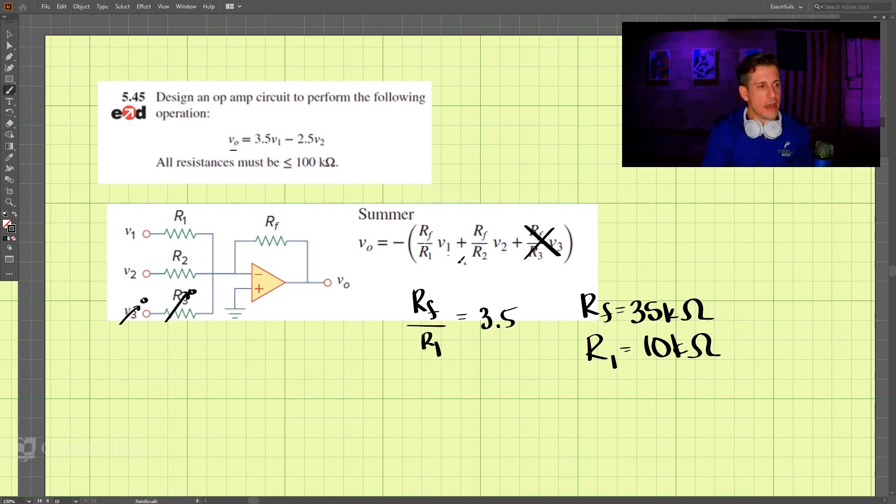Now let's move on to this here. We know then rf divided by r2 must equal 2.5, and we put in 35 kiloohms for rf, our feedback resistor, and r2 then comes out to be 14 or 15 kiloohms. So this is our circuit that we've solved for.